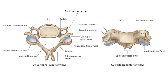The transverse process has an anterior root and a posterior root. The anterior root ends in an anterior tubercle and the posterior root ends in a posterior tubercle, and these are joined by a costo-transverse bar which bears a groove for the spinal nerve. The hallmark of a cervical vertebra is the foramen transversarium — a foramen present in the transverse process of every cervical vertebra — and through it passes the vertebral artery.